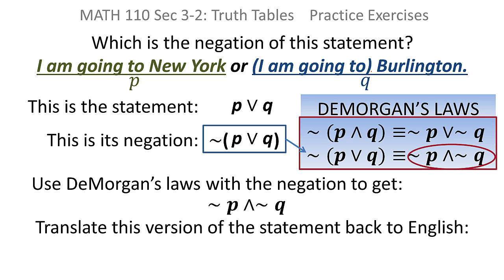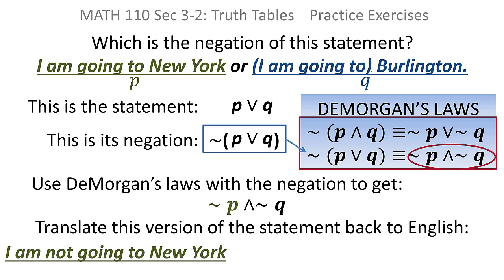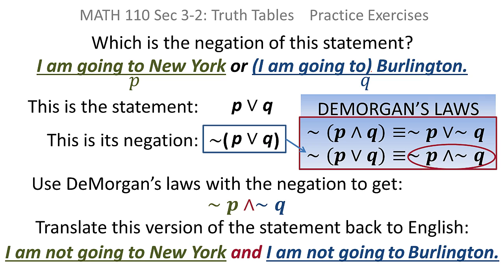Putting it all back together in English: 'I am not going to New York' — that's the negation of P — and instead of or, 'I am not going to Burlington.' So the answer is: I am not going to New York and I am not going to Burlington.